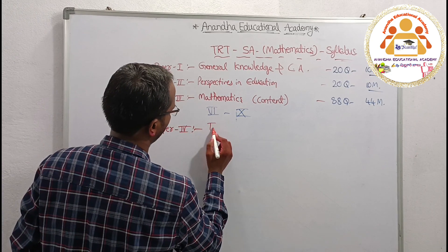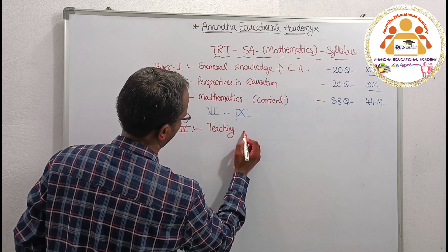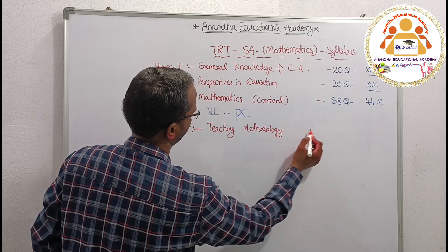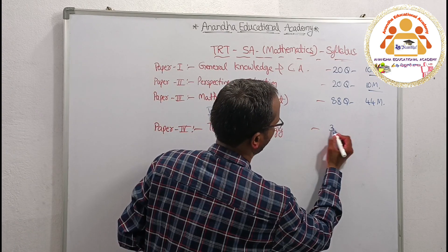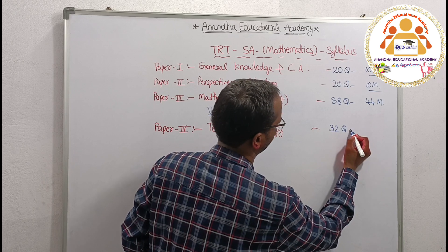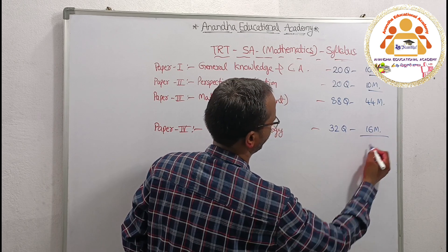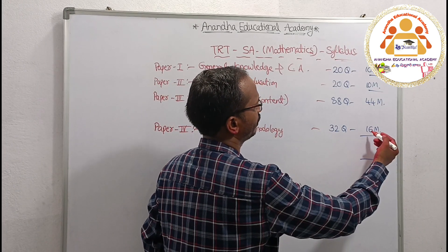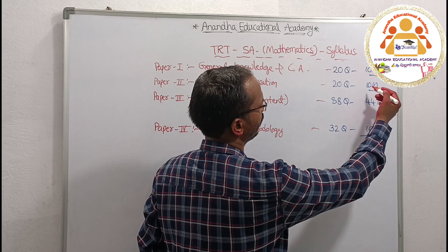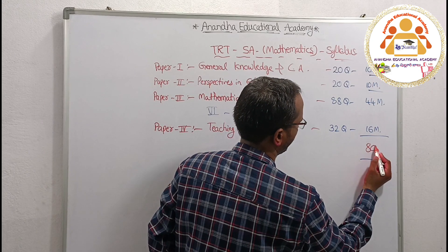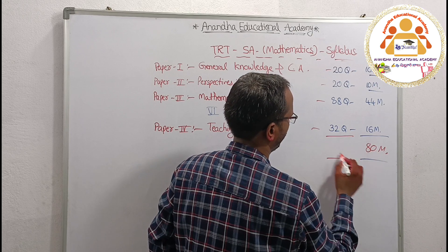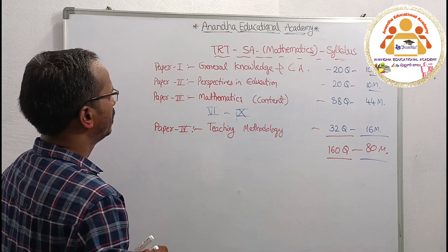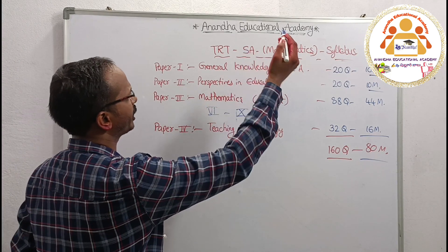Paper 4 is Teaching Methodology. In this paper there are a total of 32 questions which carry 16 marks. The total comes to: 44 plus 44 plus 60, plus 10 equals 80 marks — that is equal to 160 questions. This is our TRT School Assistant Mathematics syllabus.